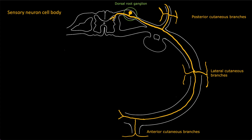Ultimately, the sensory signals travel into the dorsal horn of the spinal cord, where ascending tracts carry them to the sensory area located in the cerebral cortex. So to note: motor fibers run in the ventral root, while sensory fibers run in the dorsal root.